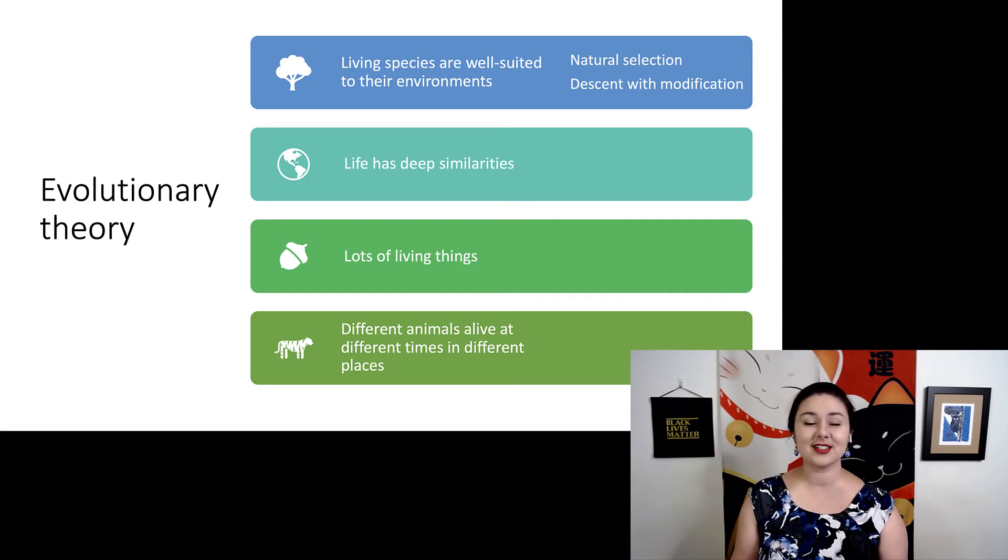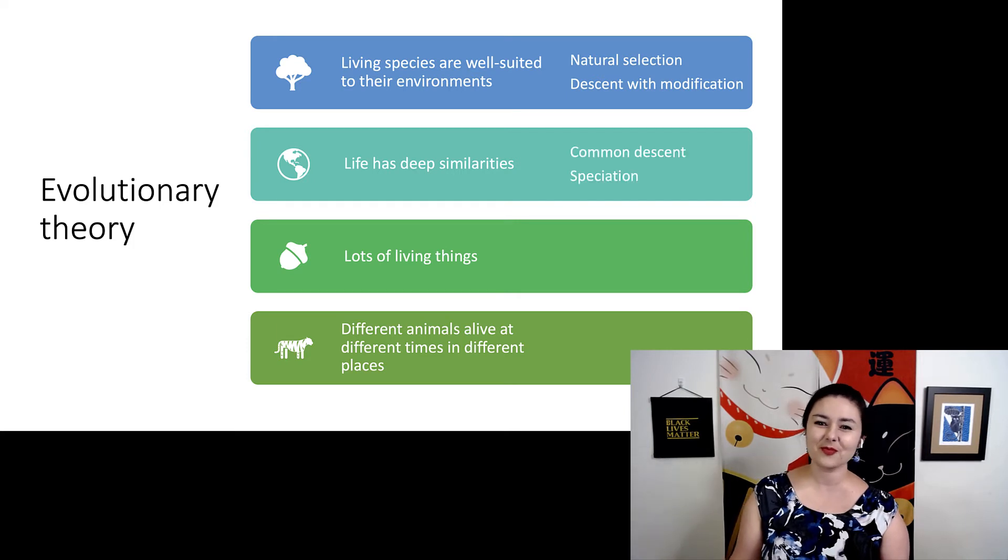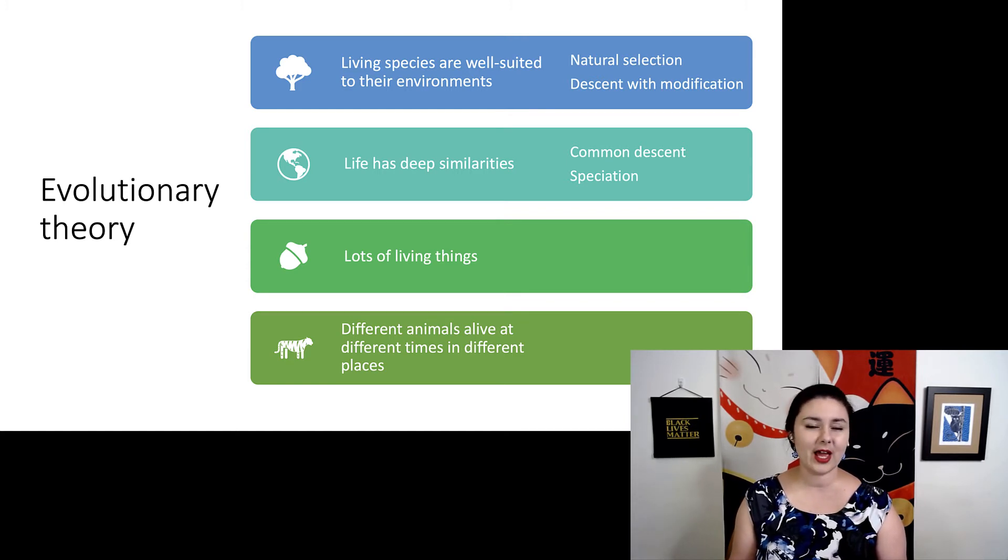And we can take some of those components of evolution and put them directly with these different lines of evidence. So natural selection and descent with modification—those are responsible for why species are well-suited to where they live. Common descent and speciation are both related to the fact that life has deep similarities. We have this common descent, which then, through speciation, creates many different species. And of course, speciation is related to the diversity of life and why we see so many different species. Both speciation and extinction are responsible for the fact that different things live in different places at different times.